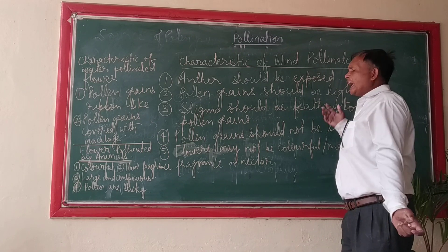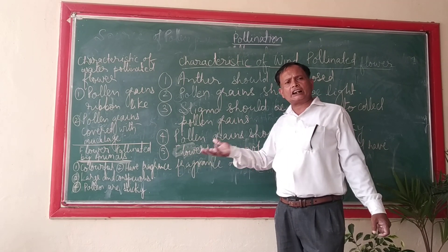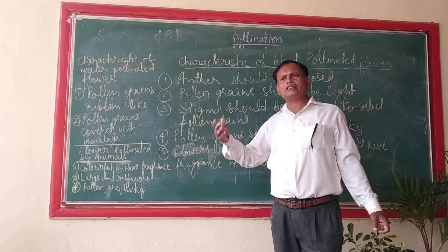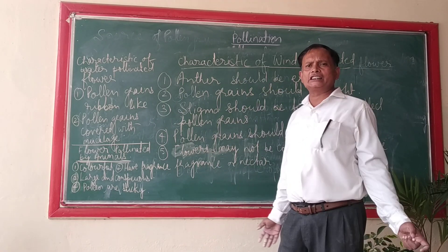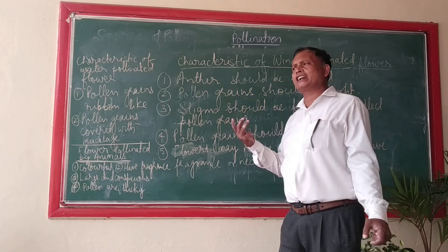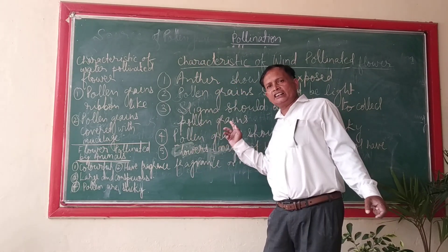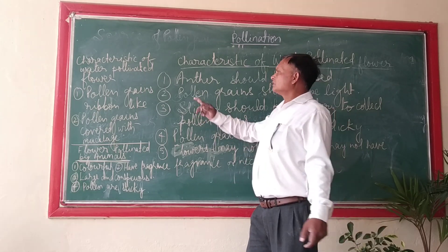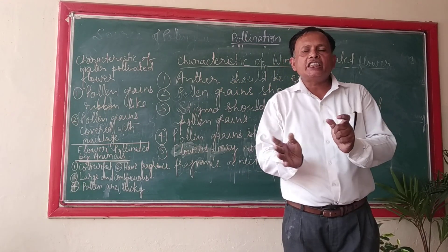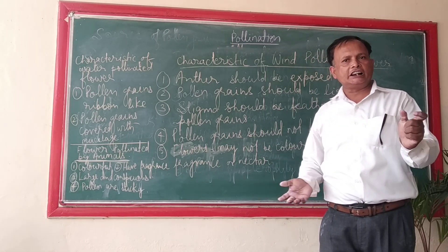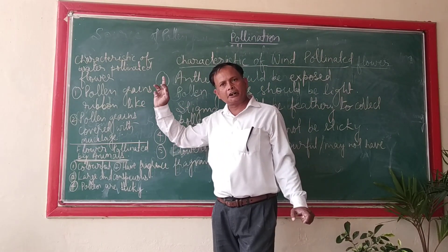Water-pollinated flowers may or may not have nectar, because nectar is used to attract insects or other pollinating agents. The first unique characteristic of water-pollinated flowers: pollen grains should be ribbon-like, so that they can bear the stress of water current and flow with it without breaking.